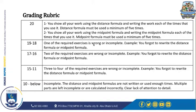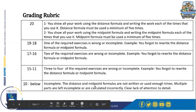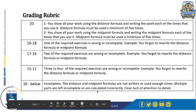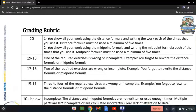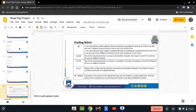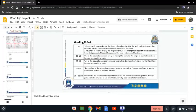For a score of 19 to 18, one of the required exercises is wrong or incomplete. From 17 to 16, two of the required exercises are wrong or incomplete. From 15 to 11, three or four of the required exercises are wrong or incomplete. For 10 or below, the work is incomplete, the distance and midpoint formulas are not written or used enough times, multiple parts are left incomplete or calculated incorrectly, and there is a clear lack of attention to detail. That is it for the math term one final assessment — thank you.